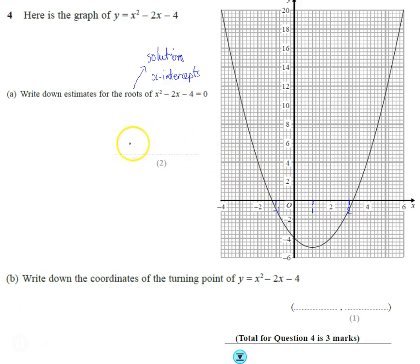We can see here one of them is 2.2. One little square is worth 0.2. And the other one is minus 1.2. Okay, so they're the roots.